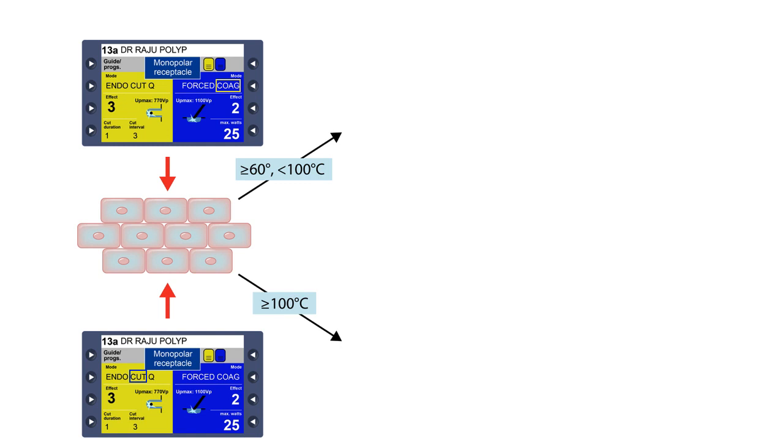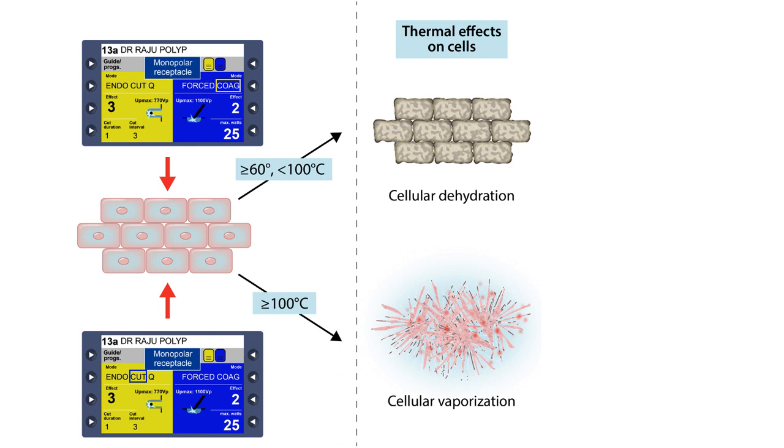For coagulation, it is between 60 to 100 degrees. For cut, it has to be above 100 degrees for the water in the cells to boil. It is not only the temperature elevation, but also how fast it actually happens.